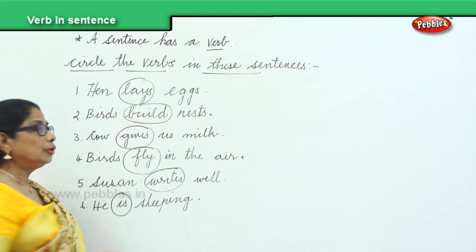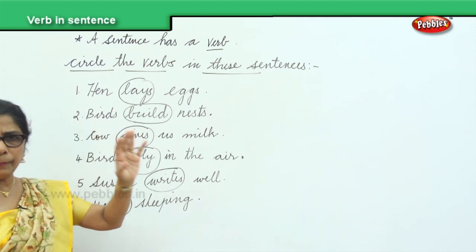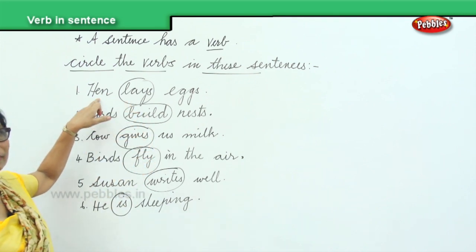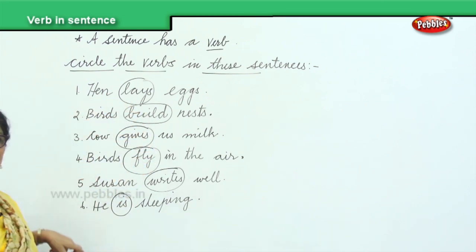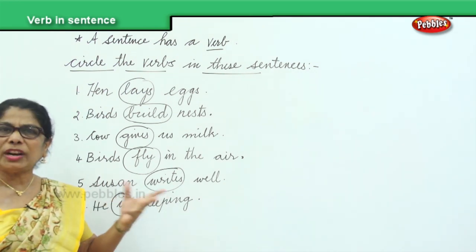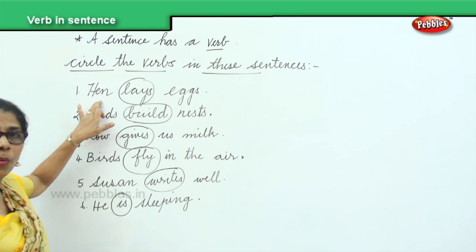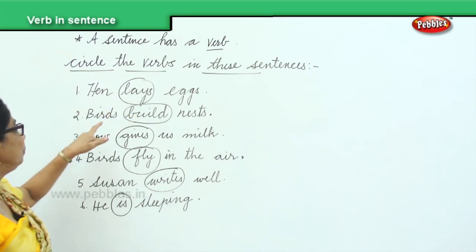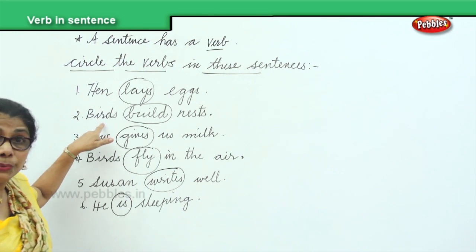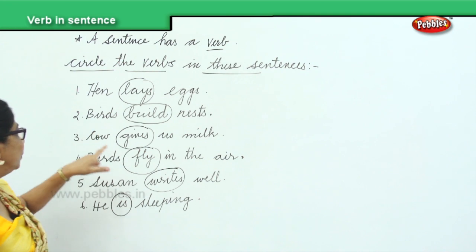Now, you have a subject in every sentence — the main person. You ask a question to this main subject and then you will know what action they are doing. Hen — what does the hen do? Hen lays — you get the verb. Bird — what does the bird do? Bird builds — you get the verb.